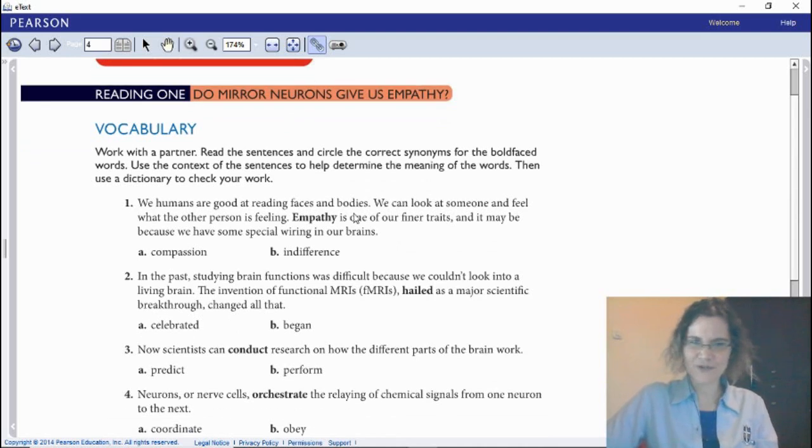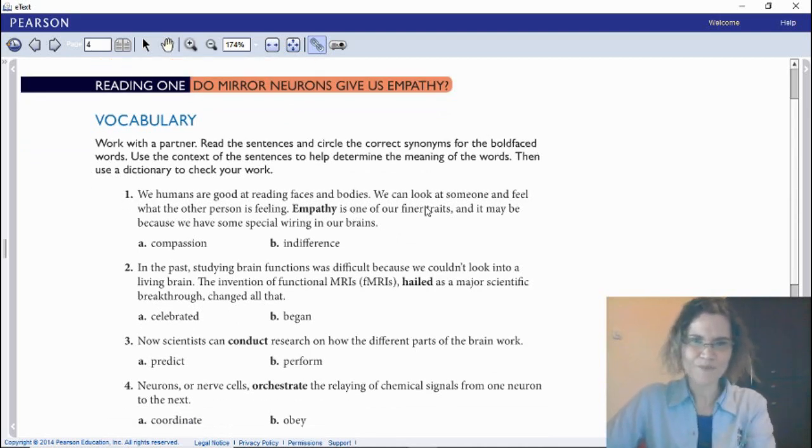We're going to focus on Reading 1: Do mirror neurons give us empathy? What is the word empathy? If you're still confused, you can look it up to find the meaning of empathy in English or in Bahasa Indonesia. No worries there. Empathy is where you're feeling for someone else, where you can understand people, you feel for people. Yes, that's empathy.